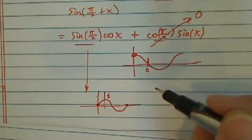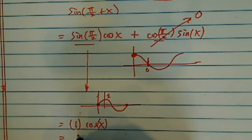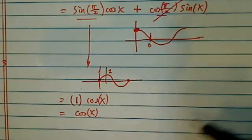So this one is equal to 1 times cosine of x, which is equal to cosine of x, and thus completes your proof.